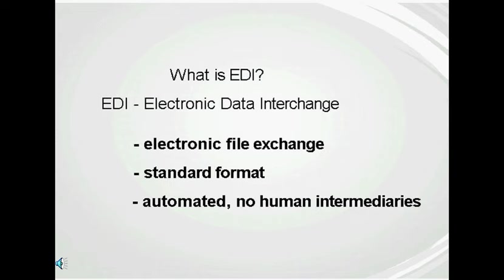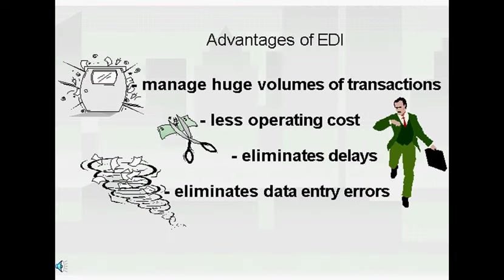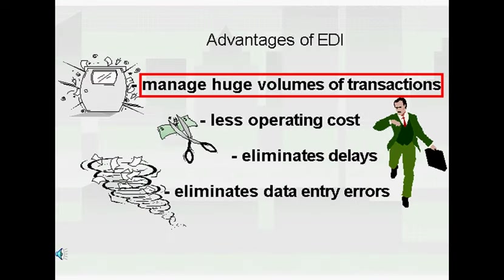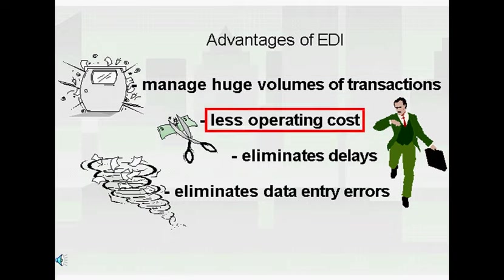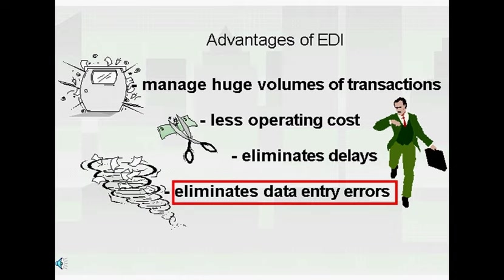So what is EDI, or Electronic Data Interchange? It is the exchange of electronic files in a standard format that is easily processable by a computer, so that the exchange can be automated without any human intervention. There are many advantages to using EDI — mainly it is used to manage huge volumes of transactions at minimal operating cost, as well as eliminate mailing delays and data entry errors.